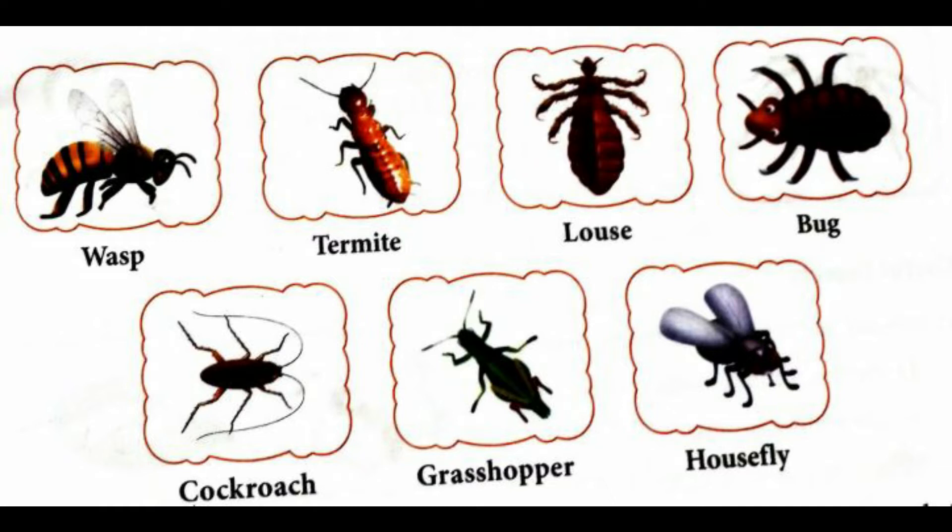Termites damage the wood. Lice suck blood from our head. Bugs bite us and give us pain and itch. Wasps also cause a painful sting. Grasshoppers destroy crops.